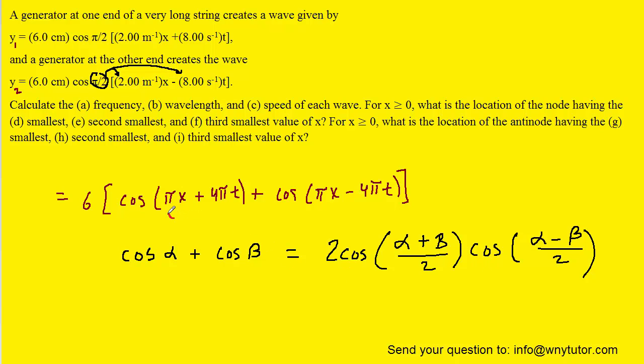And in order to use this identity, what we need to basically do is let this quantity be our α and this quantity here be our β. And we can see that when we add cosine of α plus cosine of β, it becomes this set of terms over here.